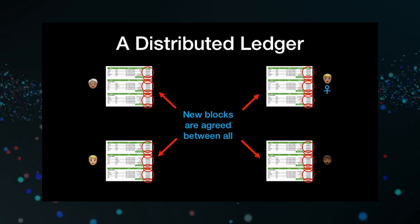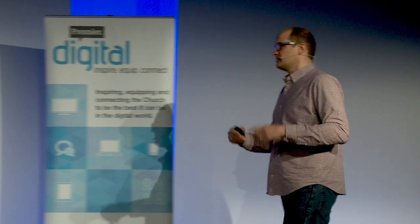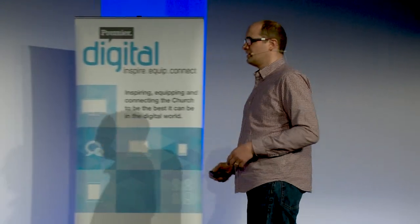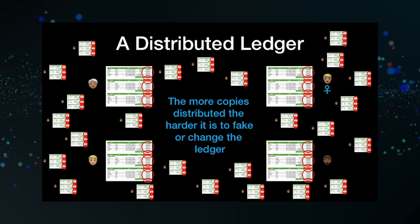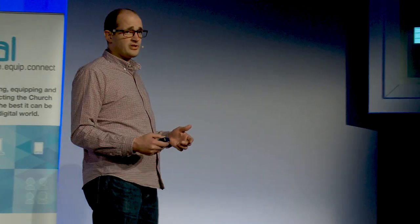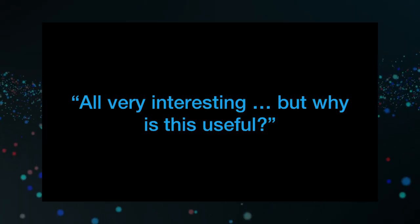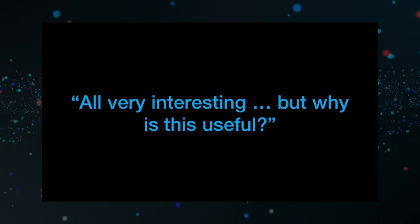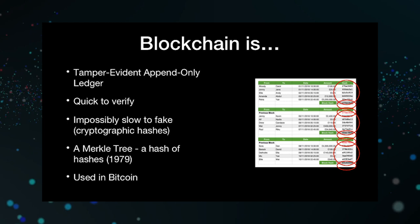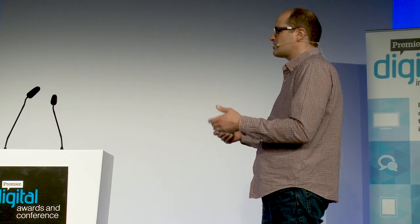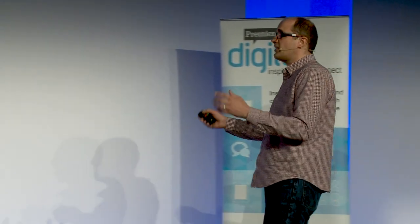Then you distribute that blockchain to a bunch of people. If you distribute four blockchains to four different people, you have a distributed ledger — that is distributed ledger technology, the basis of blockchain. Distribute it to a whole bunch of people and you make it very, very hard to change the transactions. It's a tamper-evident, append-only ledger. You can't change anything because it's distributed, it's quick to verify via hashes, and it's impossibly slow to fake.